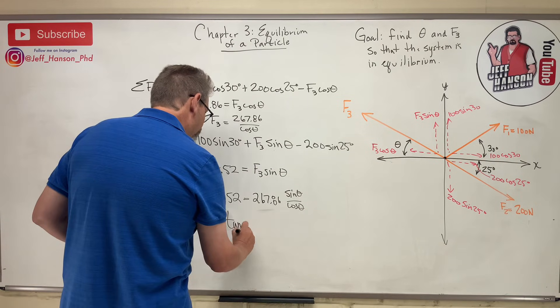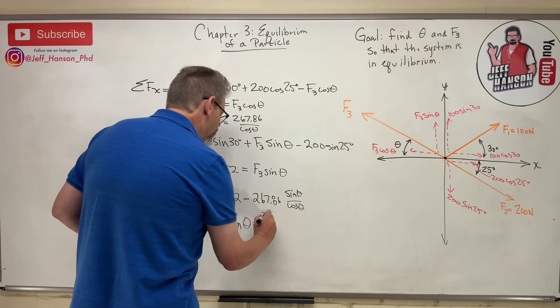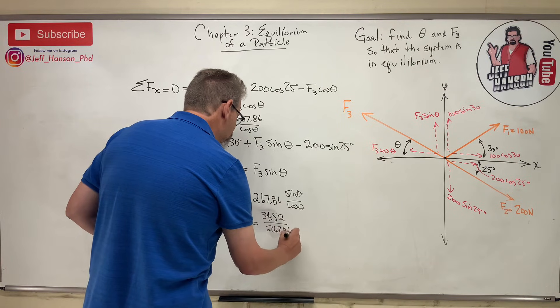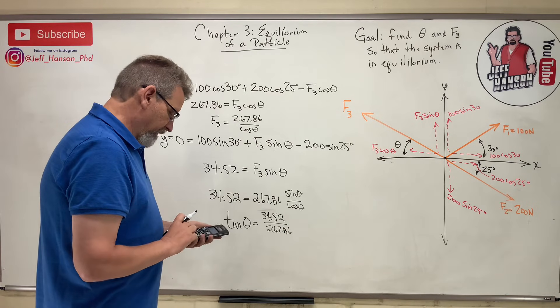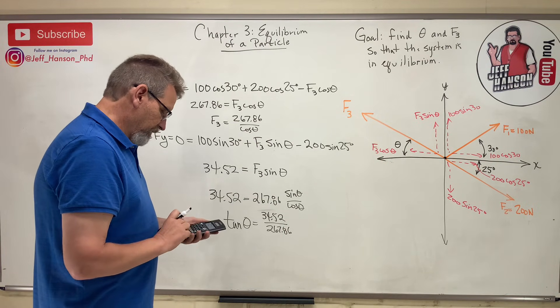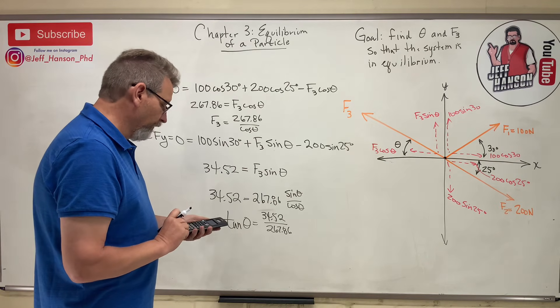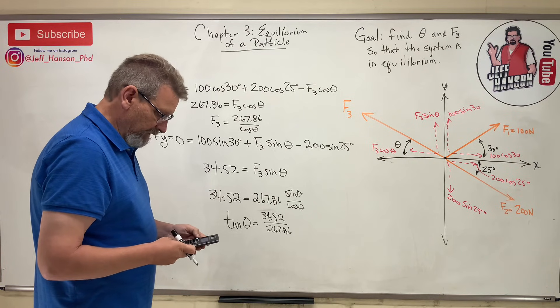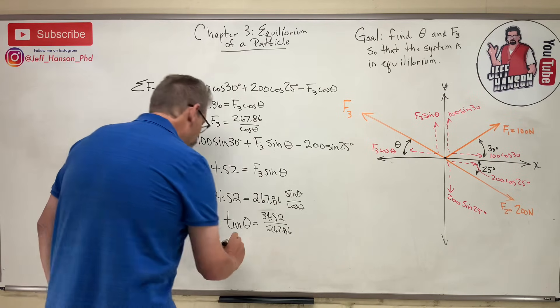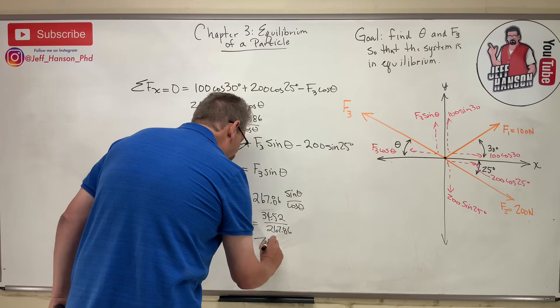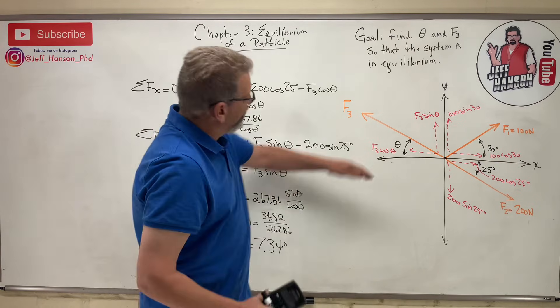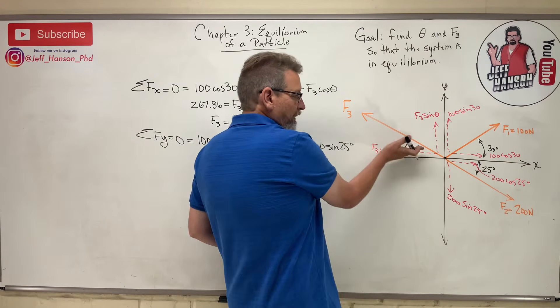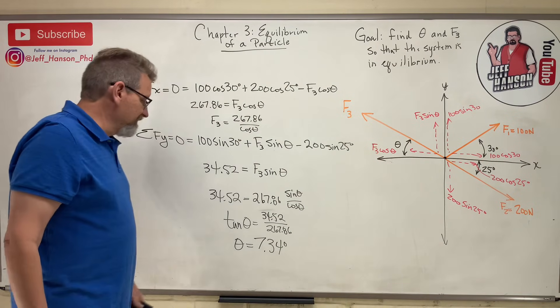So tan theta is equal to, and I have to move this to the other side, 34.52 divided by 267.86, and I can do that in my calculator. 34.52 divided by 267.86 equals 0.1288, and then I can just do inverse tan of that, and I get, drum roll please, 7.34. So theta is only equal to 7.34 degrees. So this guy is really at a really shallow angle, isn't he, to make this whole thing balanced, and it kind of makes sense. Like if you're playing tug of war, which angle do you have to be at to make this thing work?